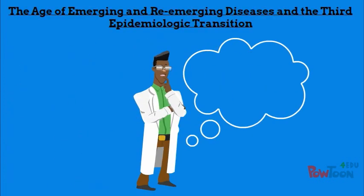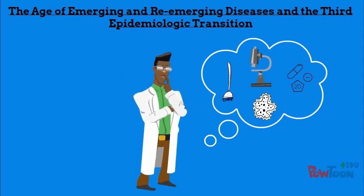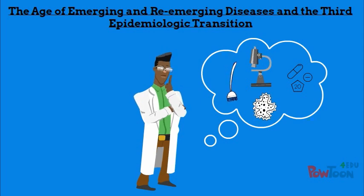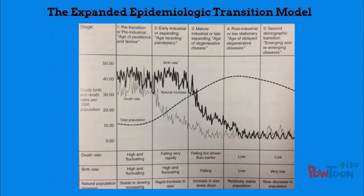The final transition in the expanded model is the age of emerging and reemerging infectious disease. This transition only includes developed nations, because developing nations are still in earlier transitions. The third transition occurred due to things such as antibiotic resistance by pathogens, microbial mutations, and sanitation reforms. This represents the expanded model posited by Barrett and colleagues, which takes into account the Paleolithic Baseline as well as the age of emerging and reemerging infectious disease.